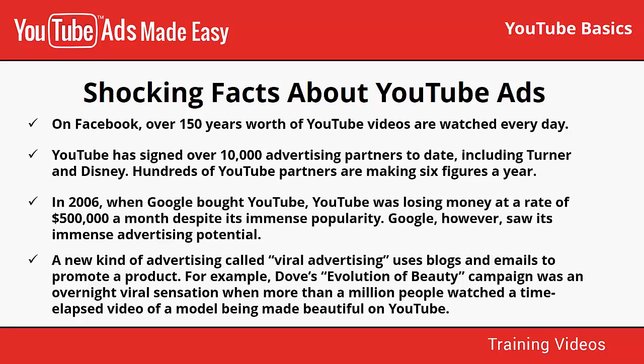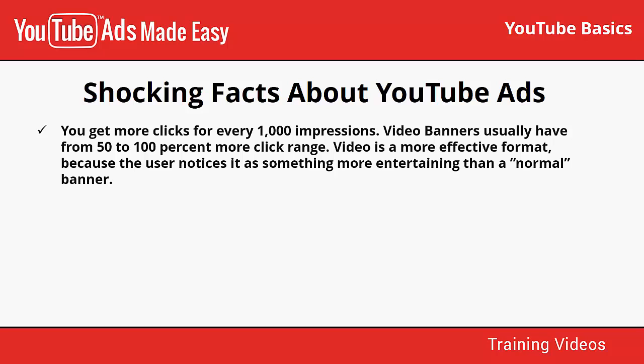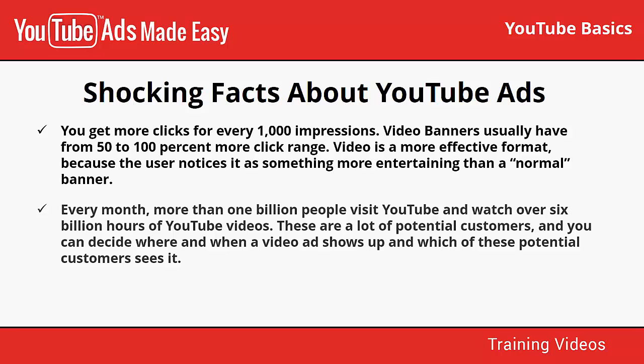Dove's evolution of beauty campaign was an overnight viral sensation when more than a million people watched a time-lapsed video on YouTube. You get more clicks for every 1,000 impressions — video banners usually have 50 to 100% more click range, because the user notices video as something more entertaining than a normal banner. Every month more than one billion people visit YouTube and watch over six billion hours of YouTube videos, and you can decide where and when a video ad shows up and which potential customers see it.